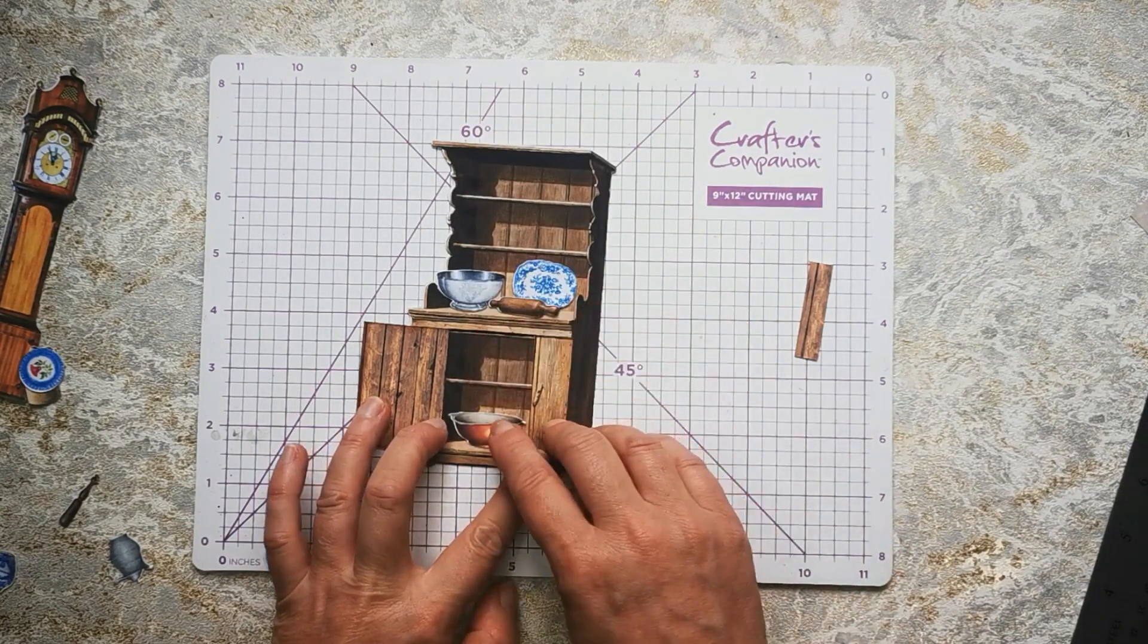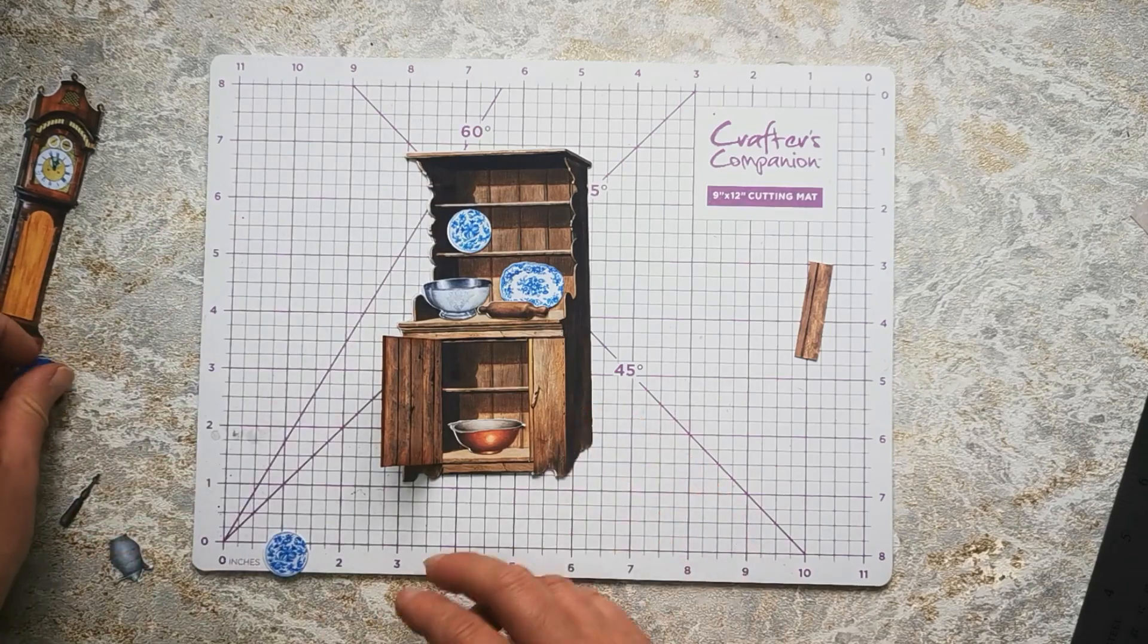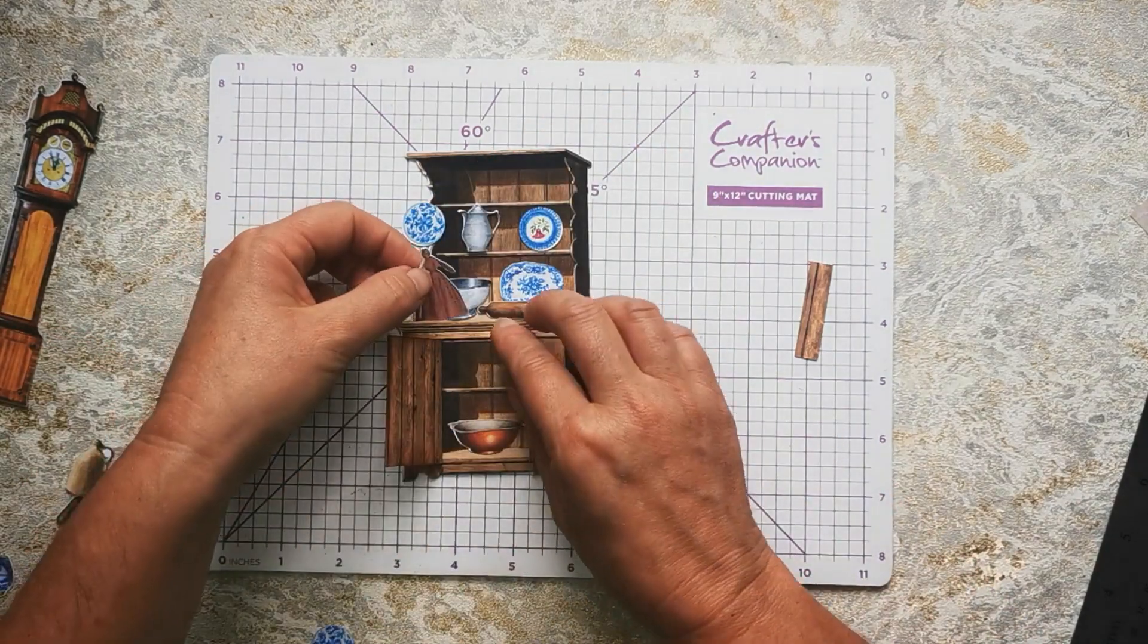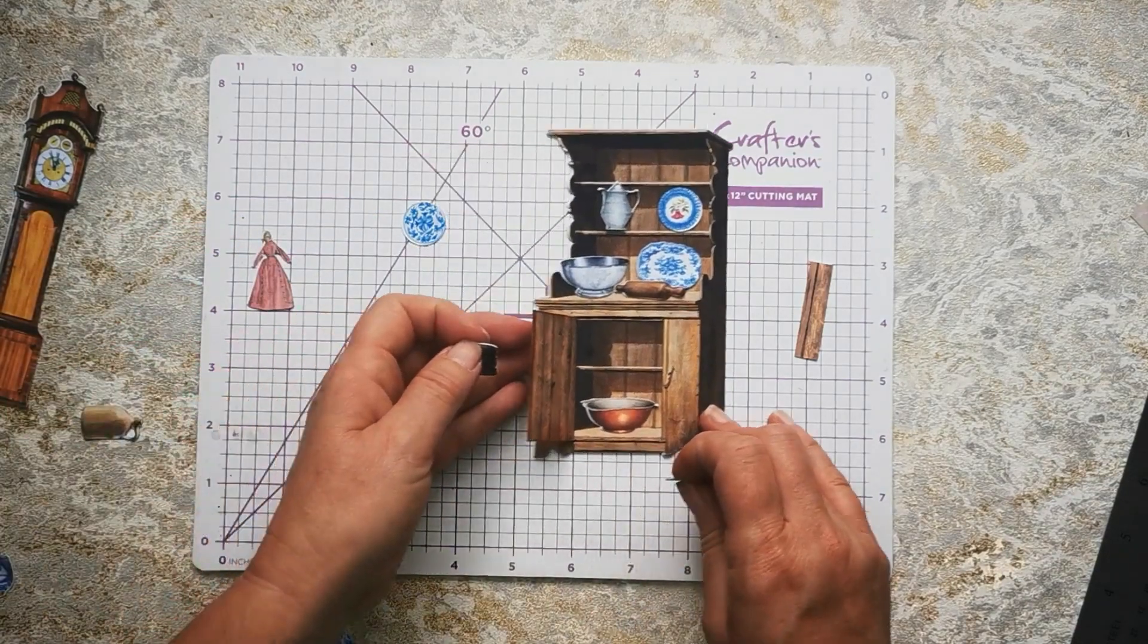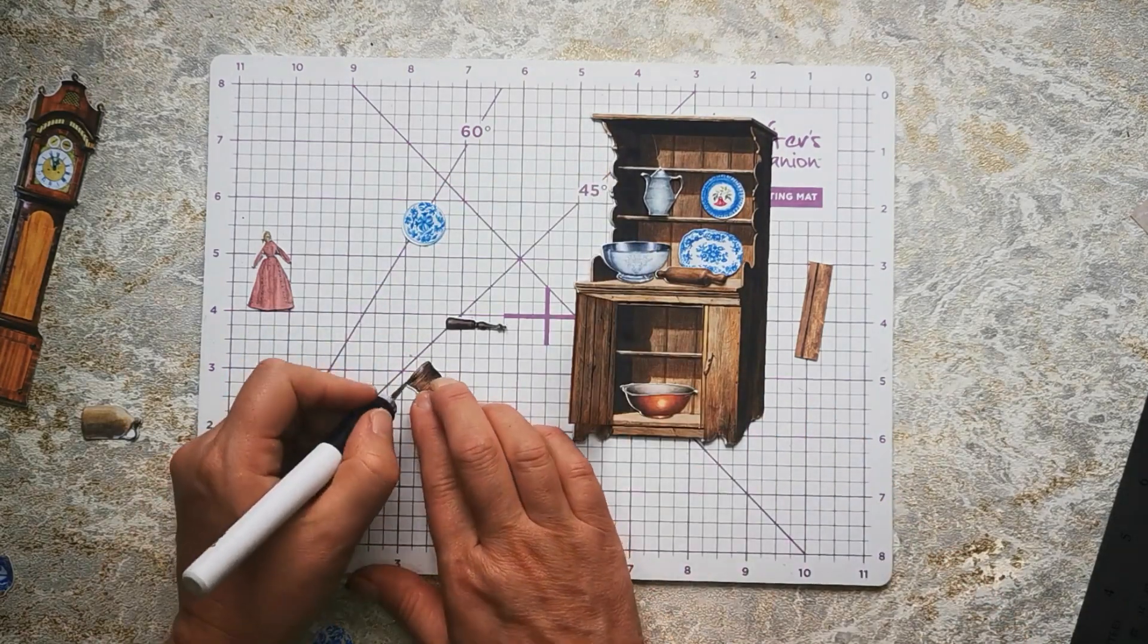There we go, some of these bigger elements will fit nicely in the cupboard. You've got some little plates here that you can use to display. There we go, and there's this little doll here. What we have got here, which is really fiddly, is a little pestle and mortar.